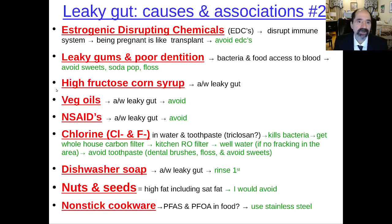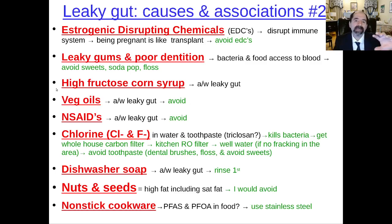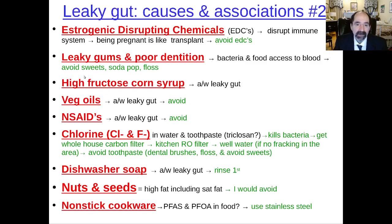Next: estrogen disrupting chemicals. People sometimes say EDCs means endocrine disrupting chemicals, but for our purposes it means estrogen disrupting chemicals. When a woman is pregnant with a baby, it's like having a transplant and it distorts the immune system. Endogenous means our body makes it; exogenous means it comes from outside. A lot of people have excessive amounts of exogenous estrogen exposures, and these can disrupt their immune system and increase their risk of autoimmune disease.